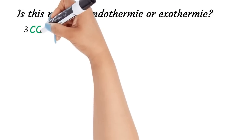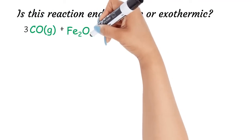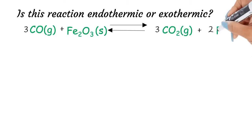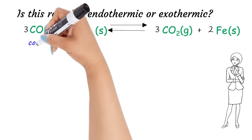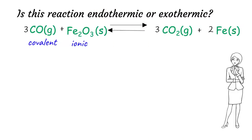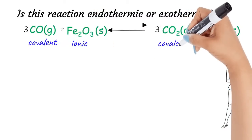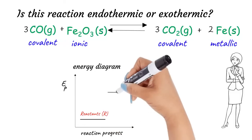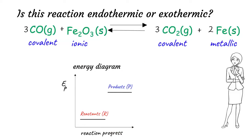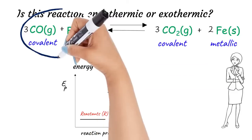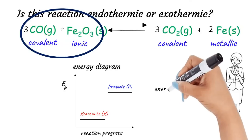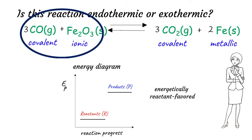Now let's consider the reaction between carbon monoxide and iron(III) oxide producing carbon dioxide gas and metallic iron. Here, on the reactant side there are covalent and ionic bonds, while on the product side there are covalent and metallic bonds. In general, ionic bonds are the strongest with lowest potential energy. Therefore, we can expect the reactants to be more energetically stable than products. Thus, we can predict this reaction to be energetically reactant favored, or endothermic, with a positive delta H.